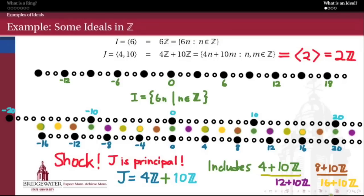Even though this ideal appeared to have two different generators, it turns out to really be the principal ideal generated by 2. In fact — and this is a fact you'd have to prove using a little number theory — every single ideal inside the integers is a principal ideal. The integers are what's called a principal ideal domain.